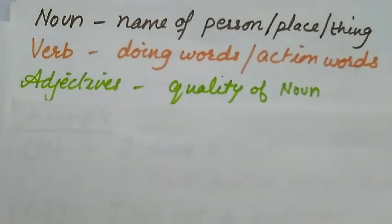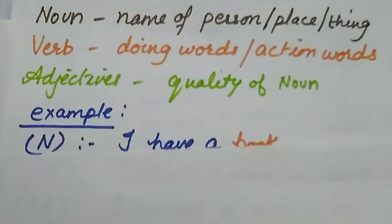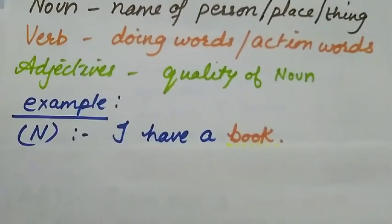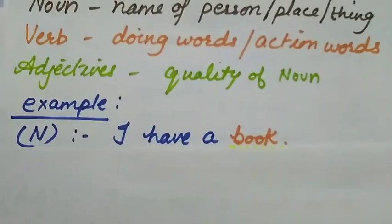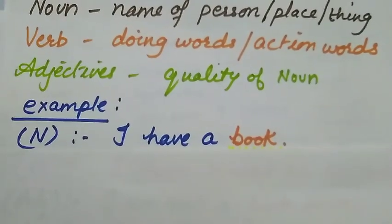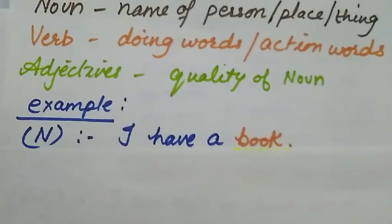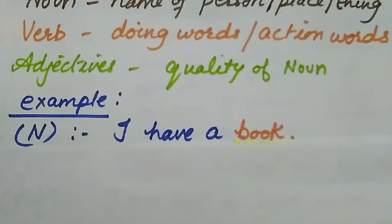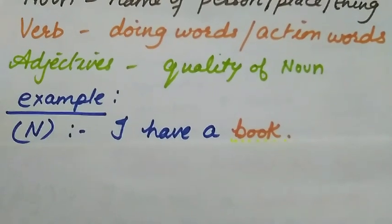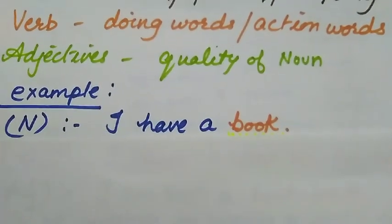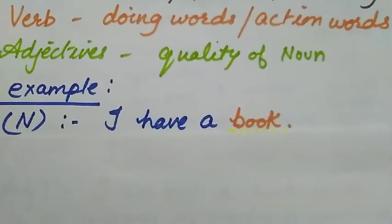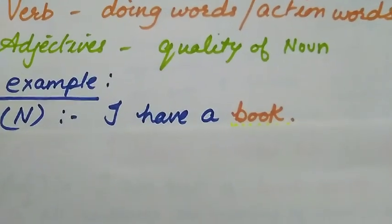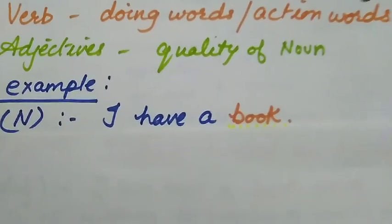Let's see examples. For noun, if we are going to work on the word 'book,' and we have to use it as a noun in our sentence, we make the sentence: I have a book.